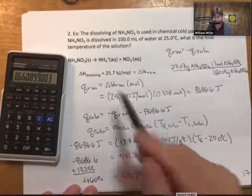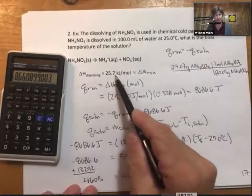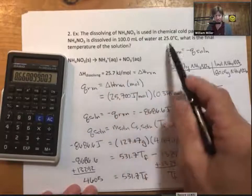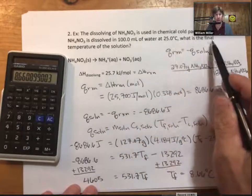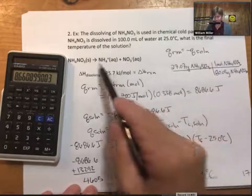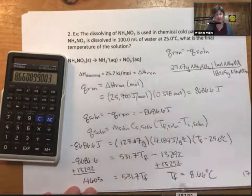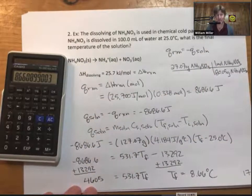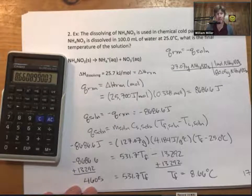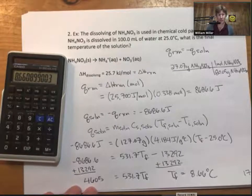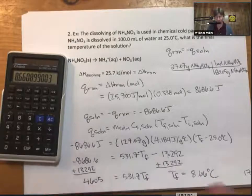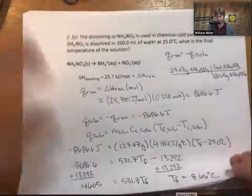Because endothermic reactions with positive delta H values lead to final temperatures that are lower, since the reaction of dissolving takes in energy. That is how we know the ballpark temperature should be lower than we started with. All right, that's two examples.